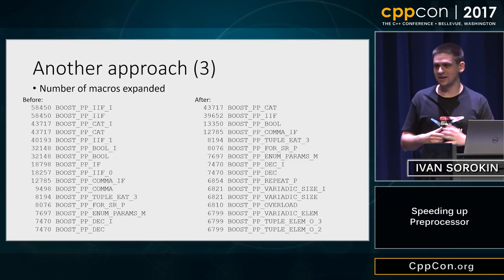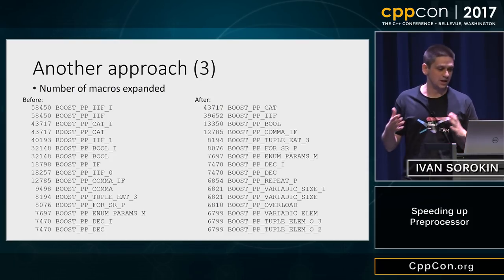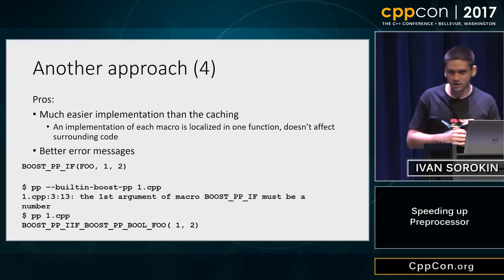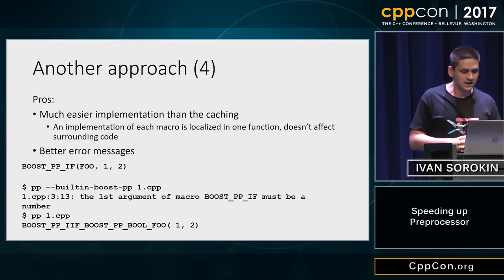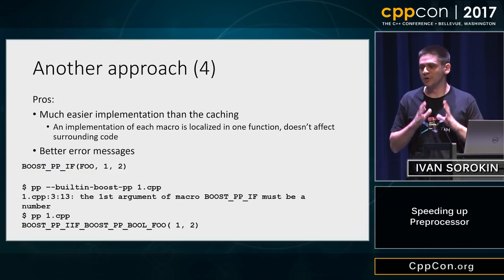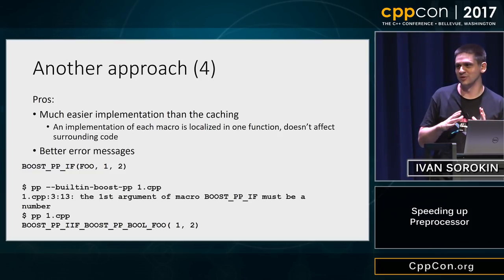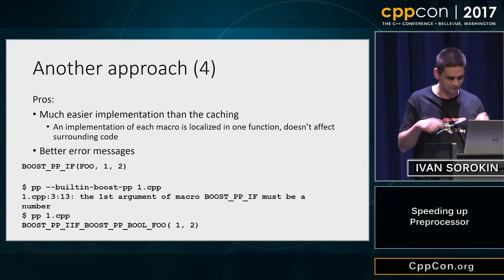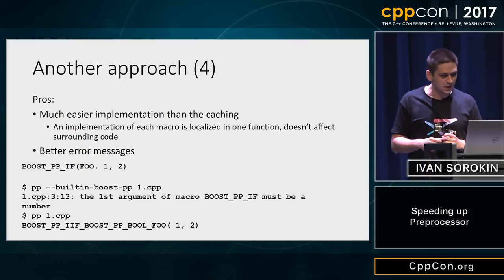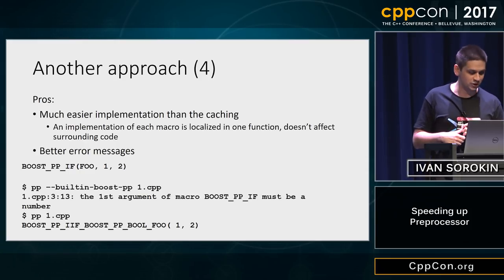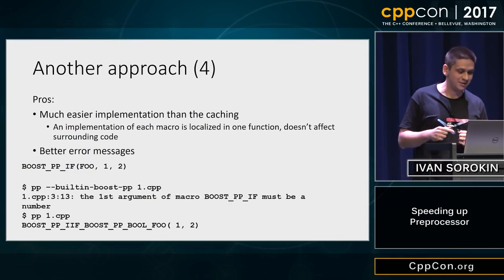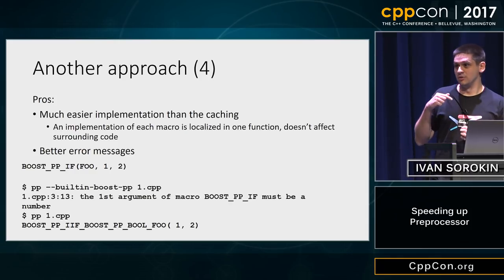This is the number of macro expansions with and without this optimization. The strength of this approach is that it's much easier to implement, because the implementation of each macro is localized in one function. We don't need any data structures to keep a graph of dependencies. And as a side effect, we got better error messages — for example, we can check that the first argument of BOOST_PP_IF is a number.